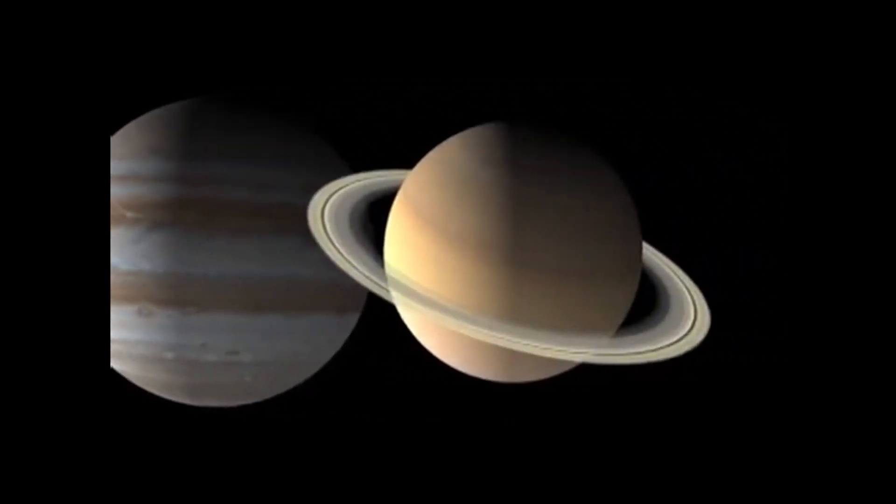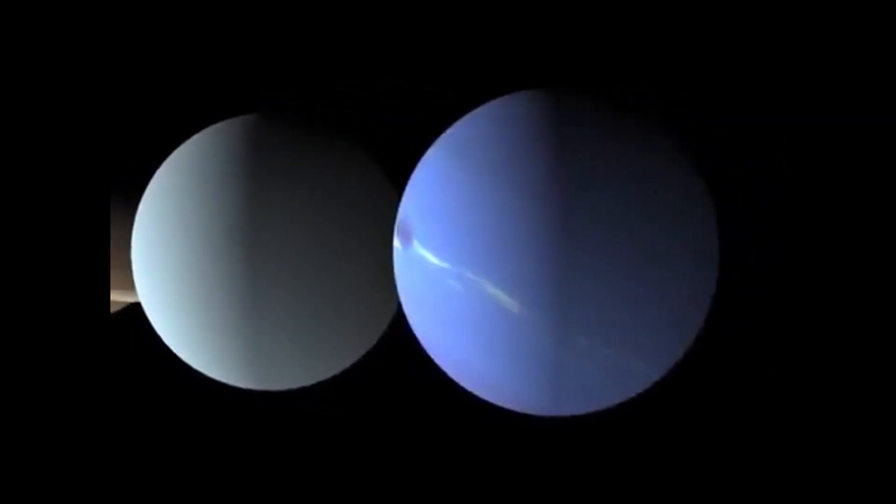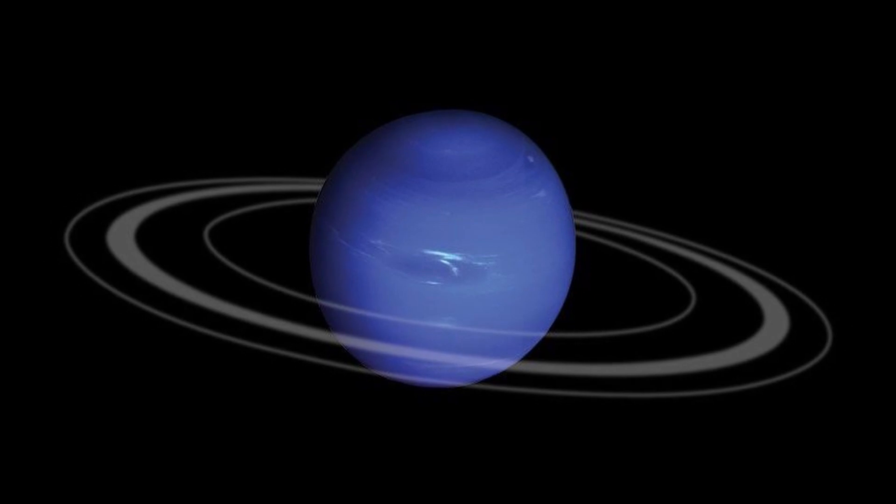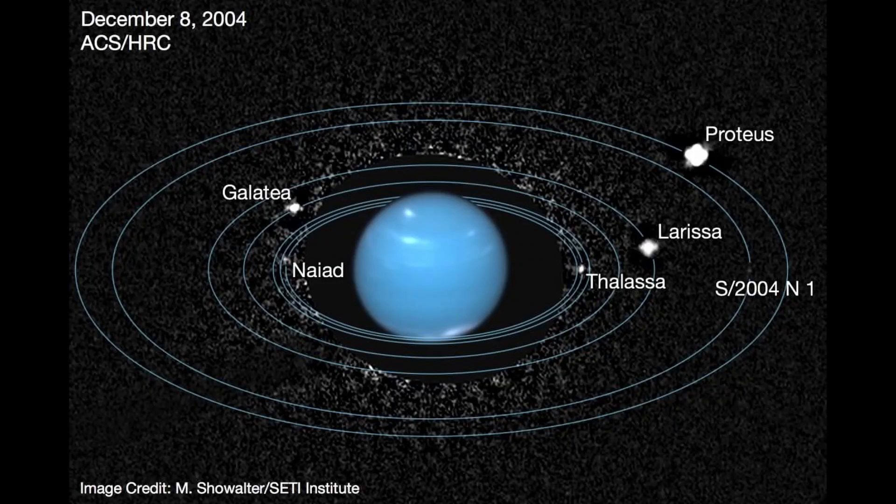Neptune has six known rings. Like the other outer planets, Neptune possesses a ring system, though its rings are very faint. They are most likely made up of ice particles and grains of dust with a carbon-based substance coating them.